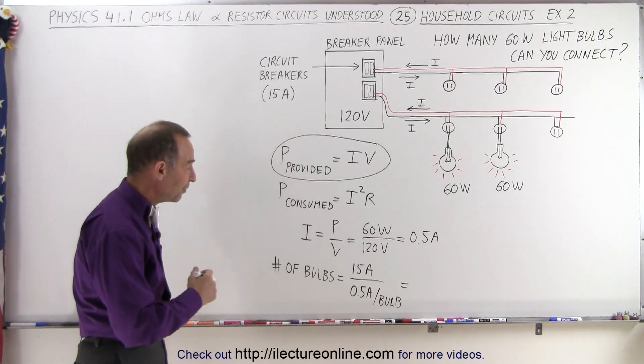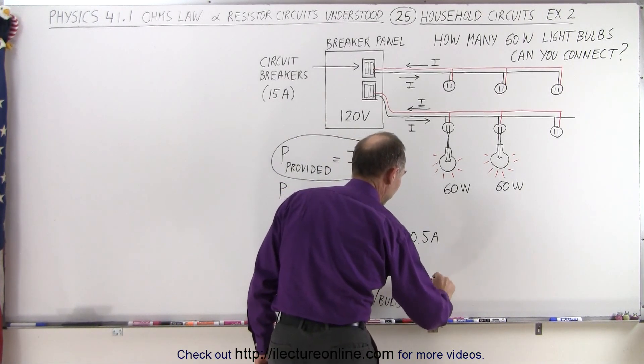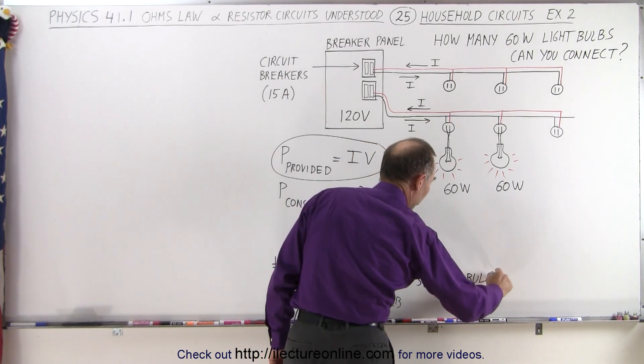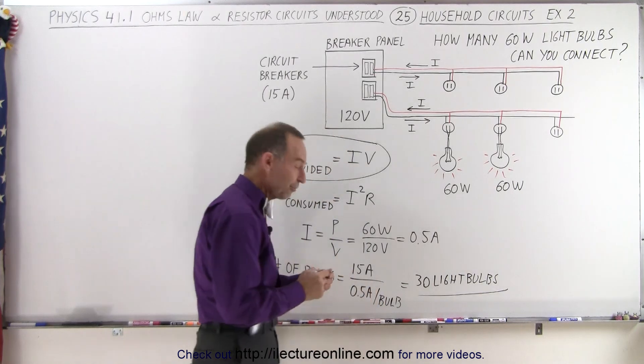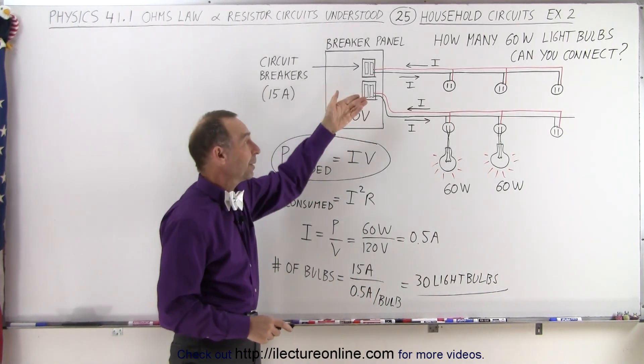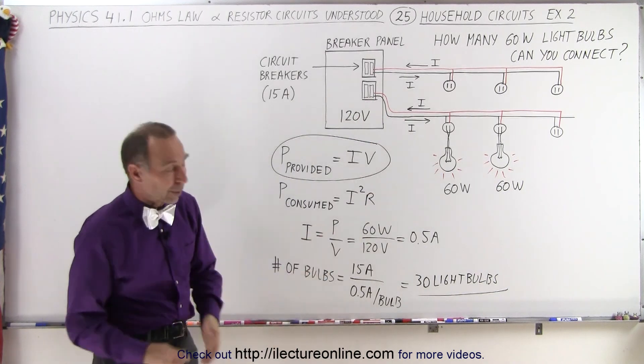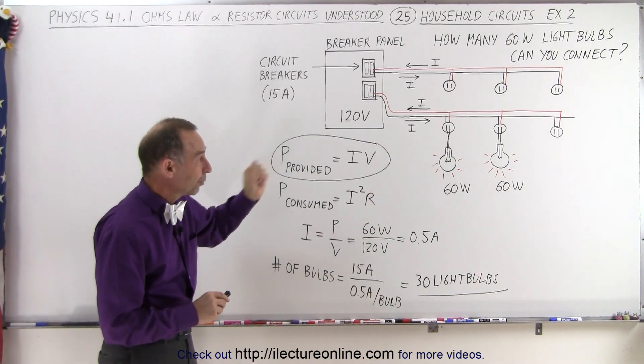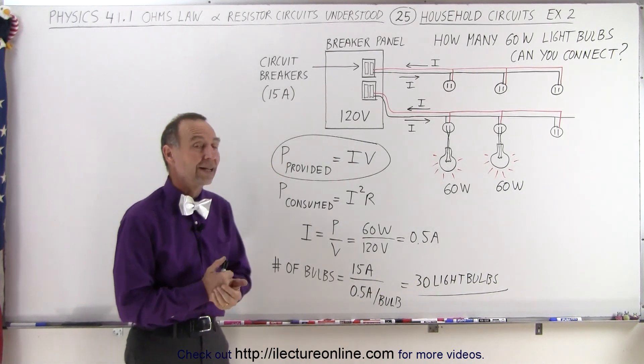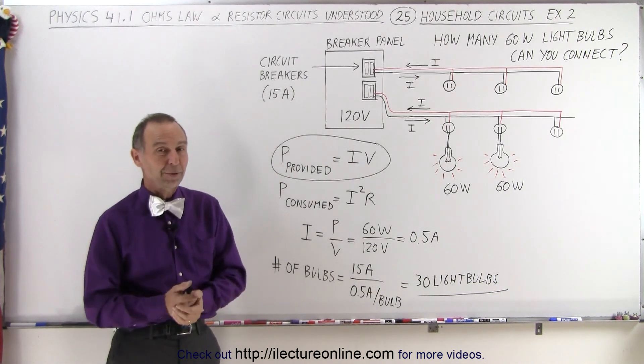15 divided by 0.5, well that's equal to 30 light bulbs. And if you try to hook up a 31st light bulb, the circuit breaker here will probably trip and open up the circuit and all the light bulbs will go out. Then you have to reset it and make sure you don't connect more than 30 of them, otherwise the circuit cannot handle it. And that's how it's done.